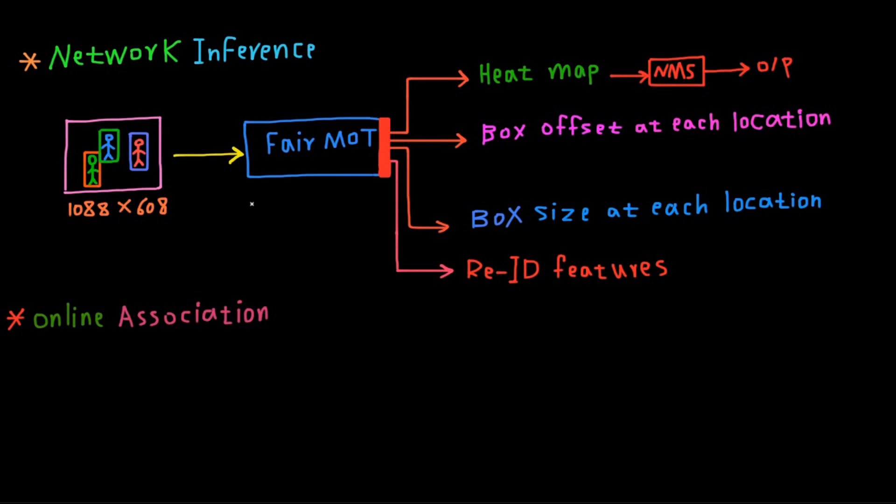We will use our pre-trained model on test video, so we will detect and track each object in the video. As we mentioned in the previous video, FairMOT model will return heatmap, box offset at each location, box size at each location, and the last one re-identification features at each location.